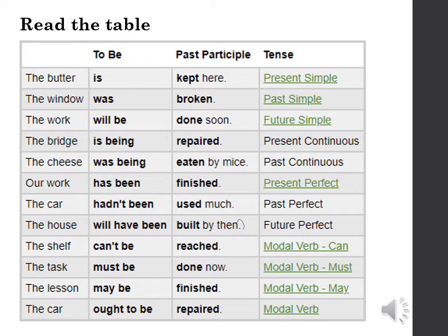Here are examples of the passive across a range of verb tenses. Present simple: 'The butter is kept here.' Past simple: 'The window was broken.' Future simple: 'The work will be done soon.' Present continuous: 'The bridge is being repaired.' Past continuous: 'The cheese was being eaten by mice.' Present perfect: 'Our work has been finished.'